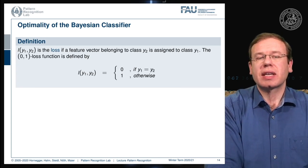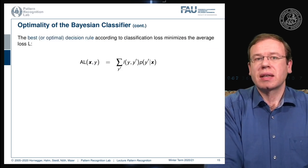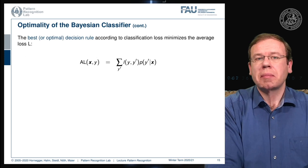Now let's see what happens if we use this loss function. You can now argue with the minimization of the average loss and this is essentially what we want to do with the Bayesian classifier.